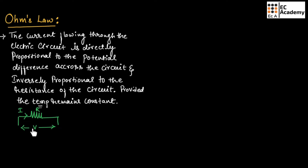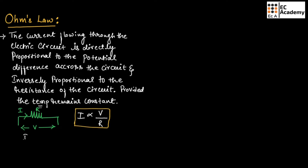If we consider a simple electric circuit where potential V is applied and current I is flowing through the circuit with resistance R, from Ohm's law we can state that the current flowing through the circuit is directly proportional to the potential difference or voltage, and it is inversely proportional to the resistance of the circuit. We can write this equation as I is equal to V by R.